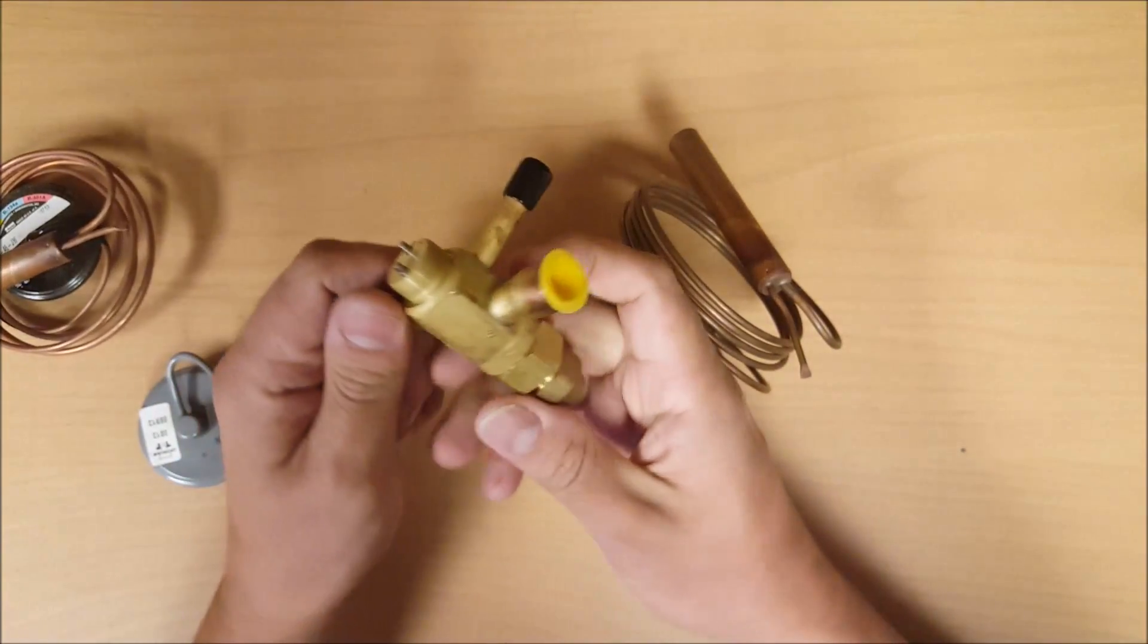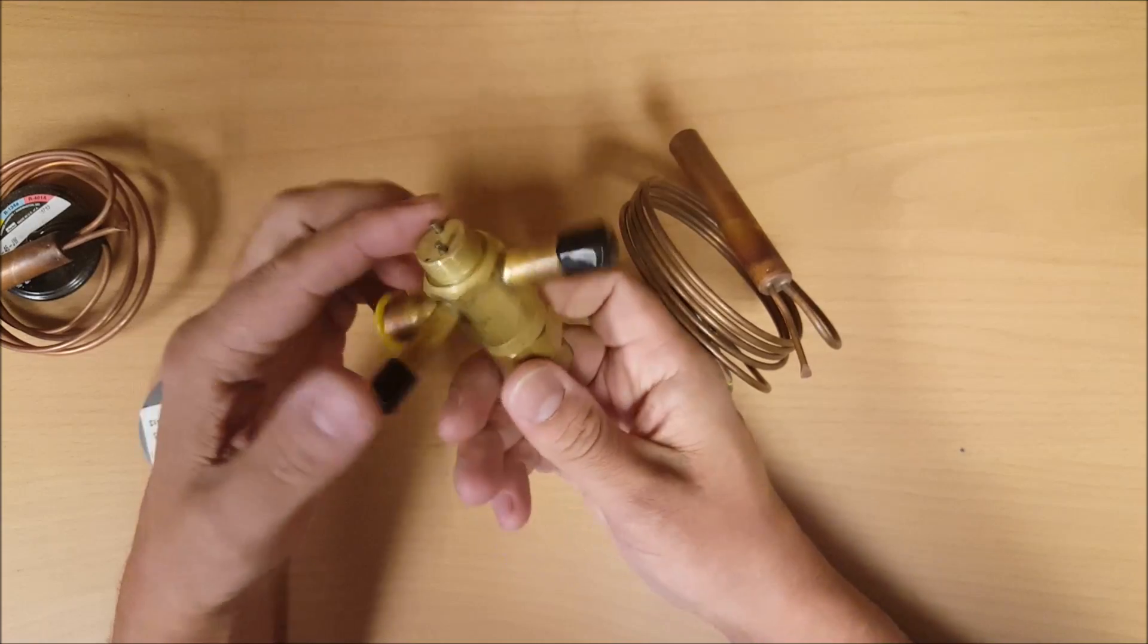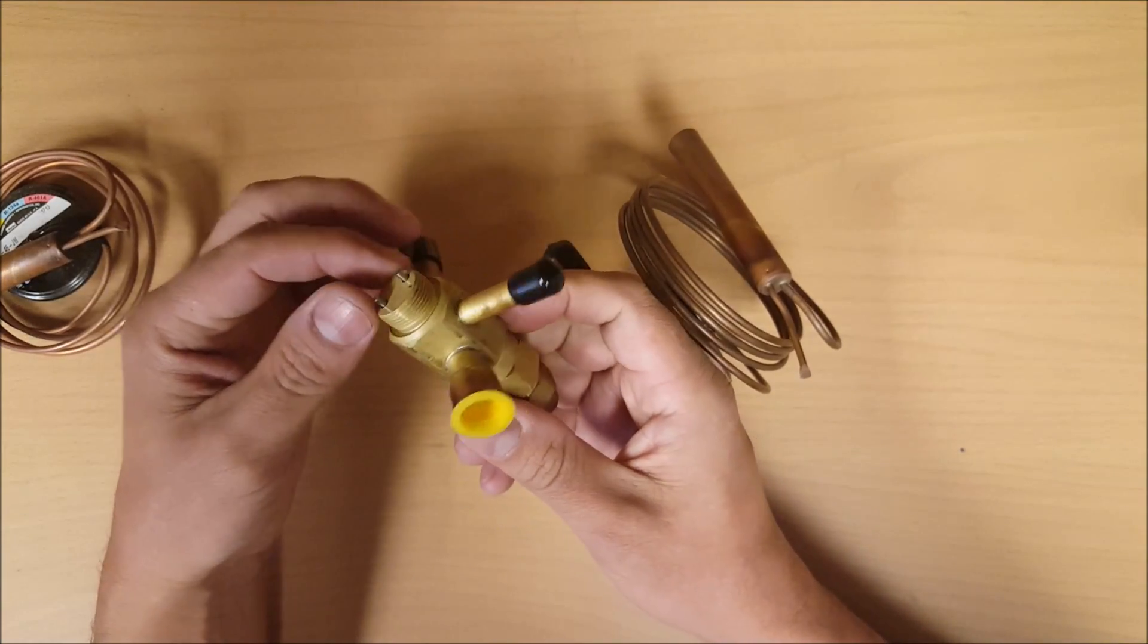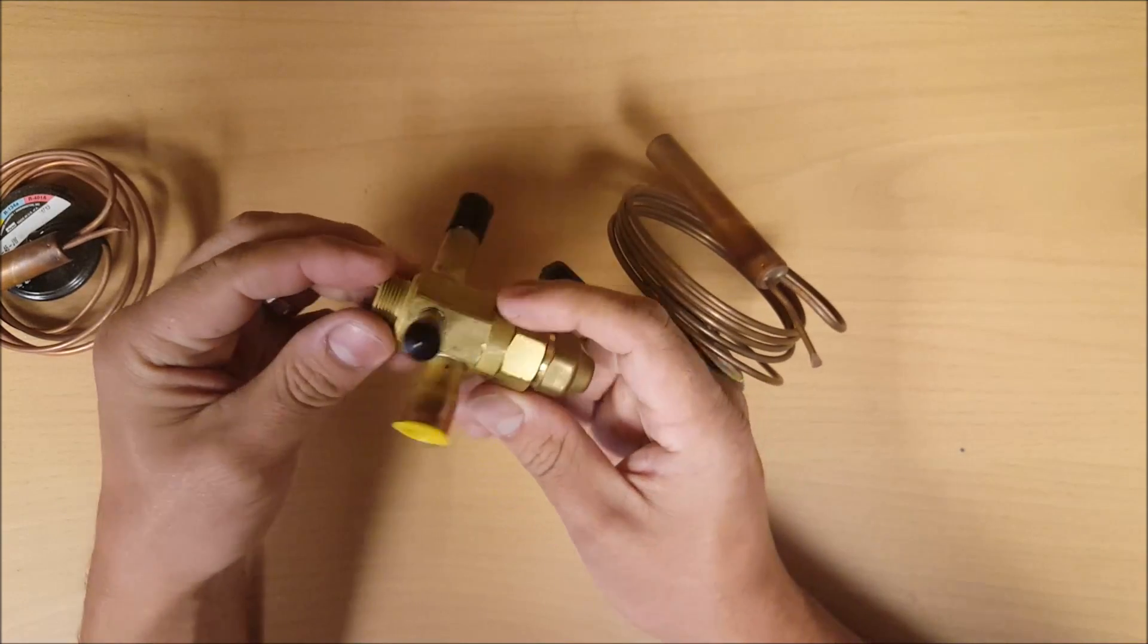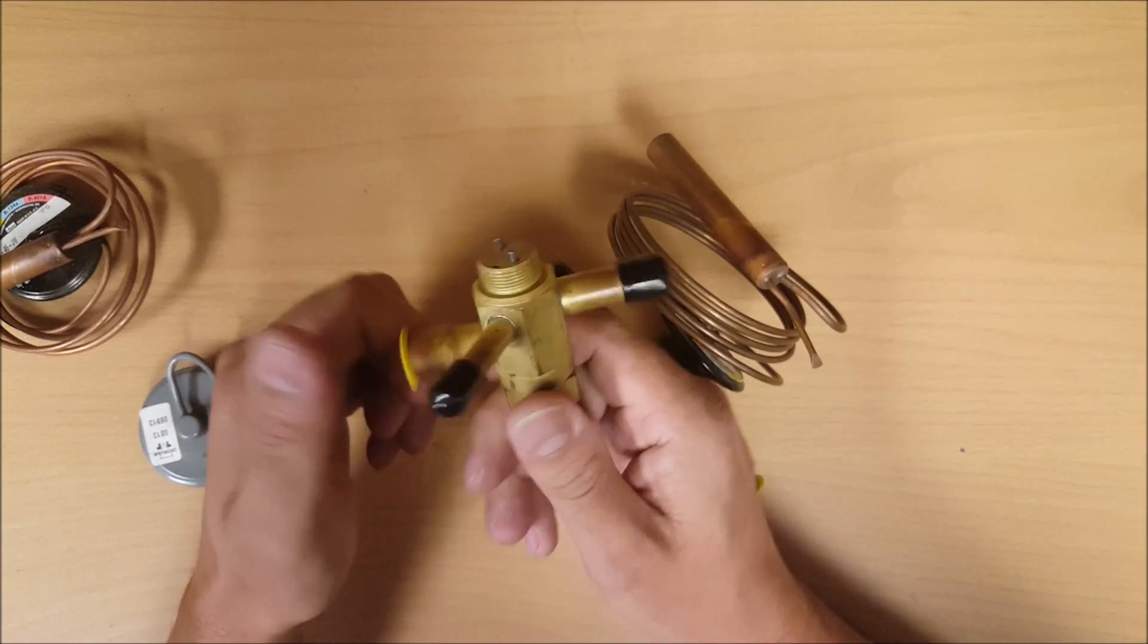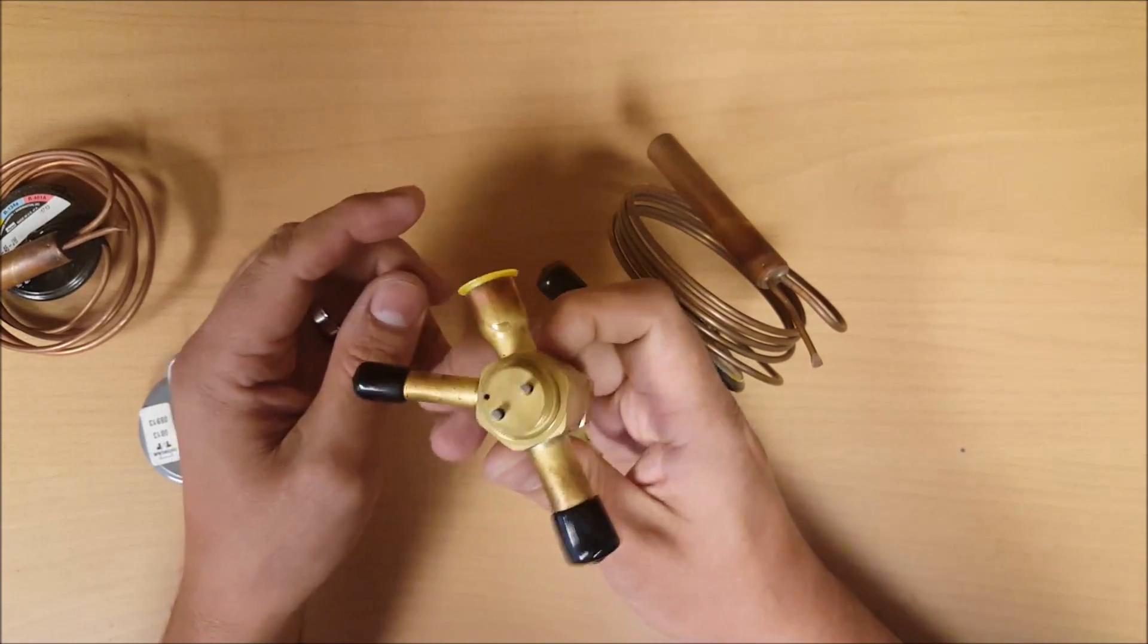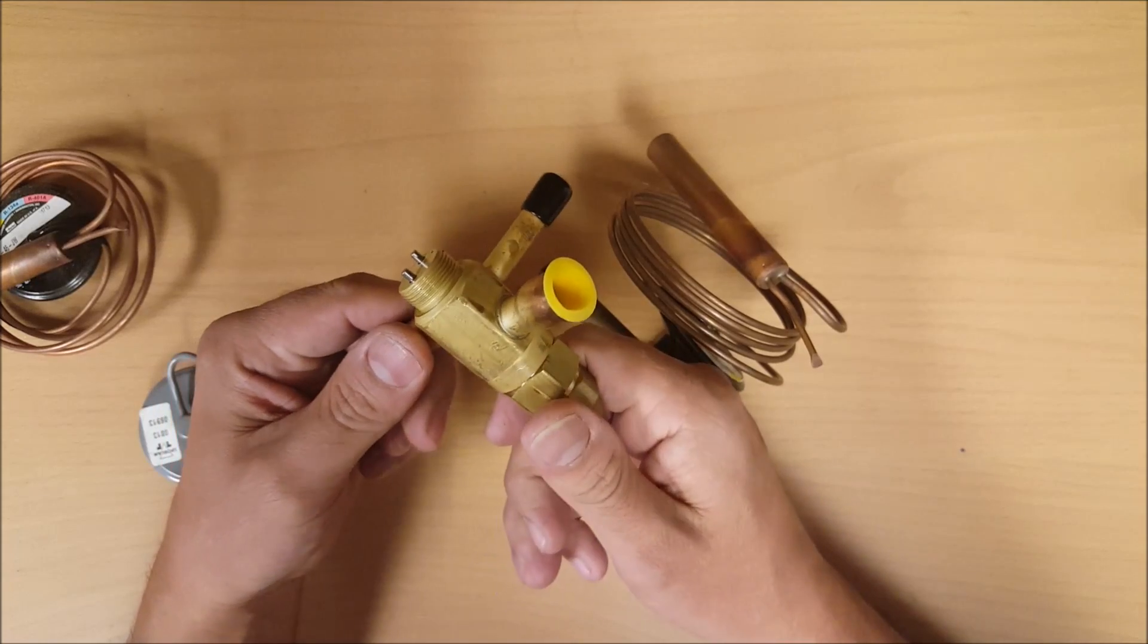The valve body itself is going to regulate the amount of refrigerant into your evaporator. This size is based on your BTUs of your unit, and these are rated in tonnage. If you've got a 12,000 BTU evaporator, that's a one ton system. You would need a one ton valve.